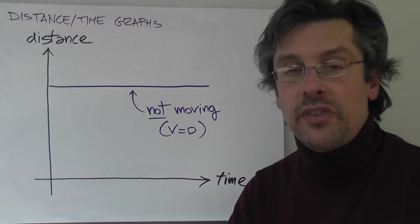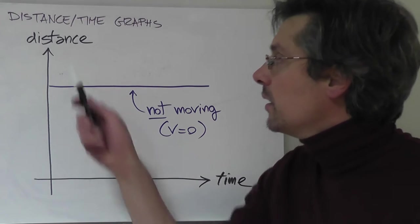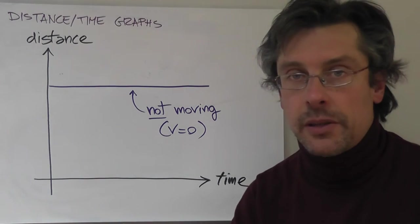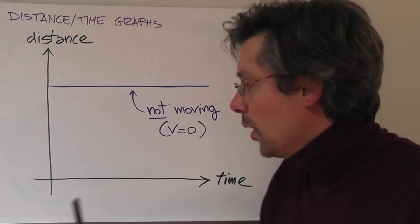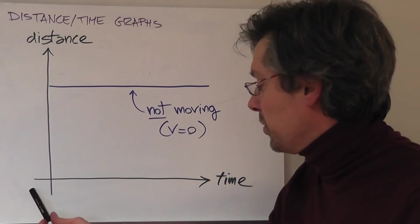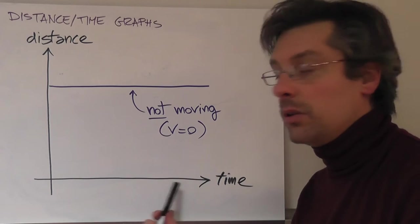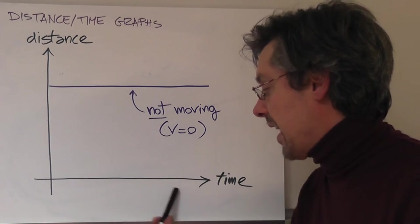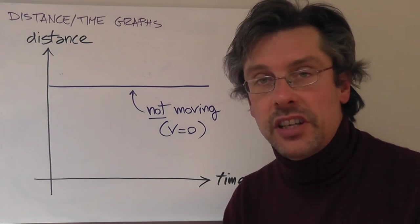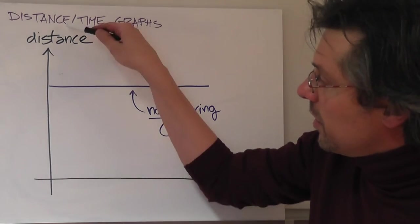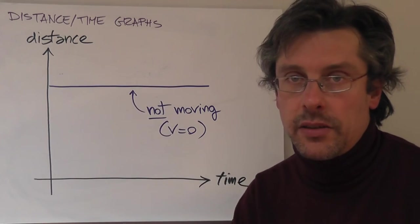We're going to start with a simpler type of motion graph: distance time graphs. In any type of motion graph, we will always put the time on the horizontal or x-axis, and in the case of a distance time graph, we'll put distance on the vertical or y-axis.